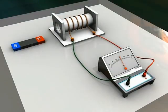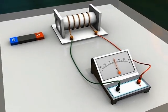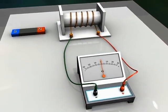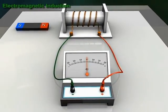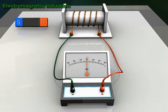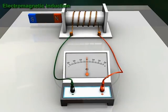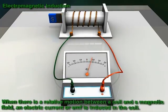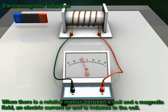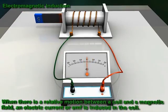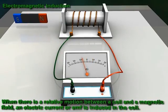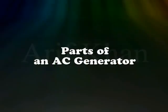An AC generator works on the principle of electromagnetic induction. In electromagnetic induction, when there is a relative motion between a coil and a magnetic field, an electric current or EMF is induced in the coil.